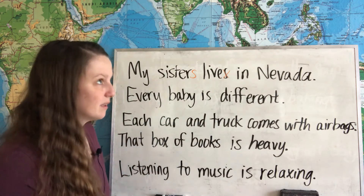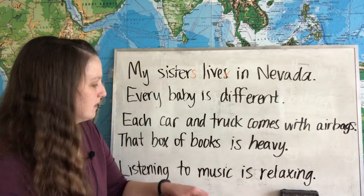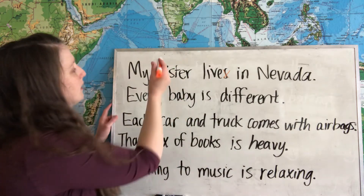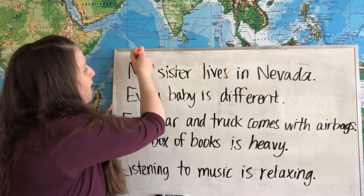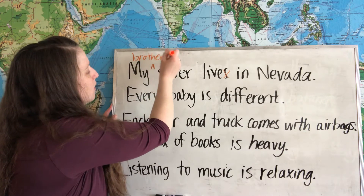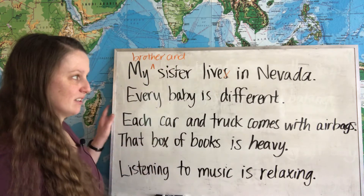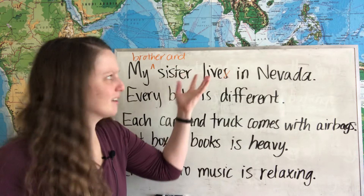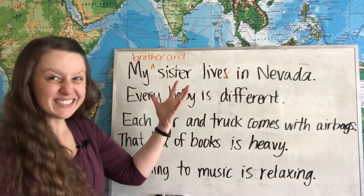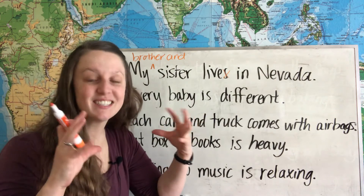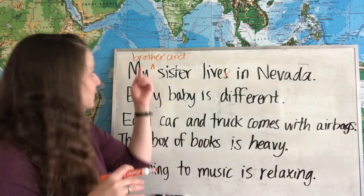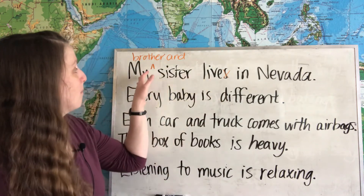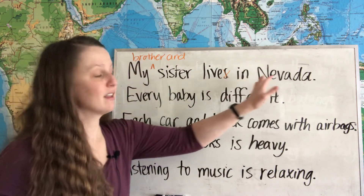We can also do this if you have more than one subject in the sentence. You can say: my brother and sister live in Nevada. We see 'sister' with the verb and we think it should be singular, but in this case the subject is 'brother and sister' together, which is like 'they' — it's two people and it's plural. So we need that plural verb: live. My brother and sister live in Nevada.